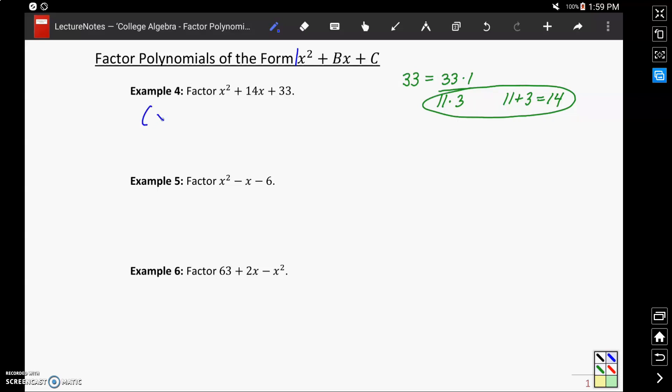We can go ahead then and jump to the factorized form for this, which will be the quantity x plus 11, times the quantity x plus 3. Keep in mind, we can always check our work, and this was true for the difference of squares problems, by multiplying this factored expression back out to verify that it gets us to the statement that we started off with.